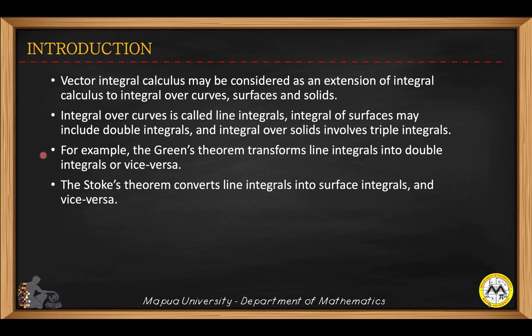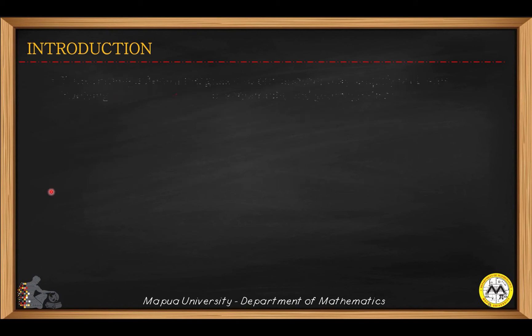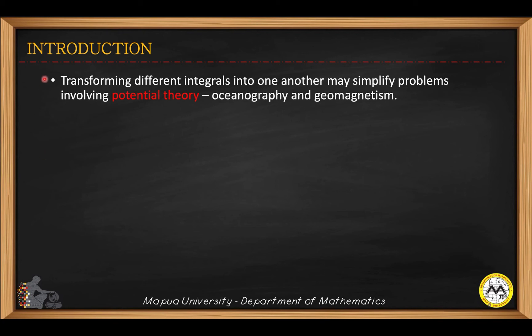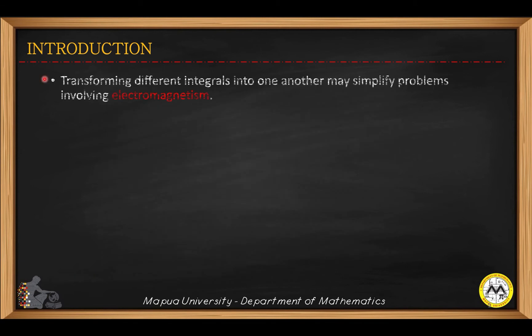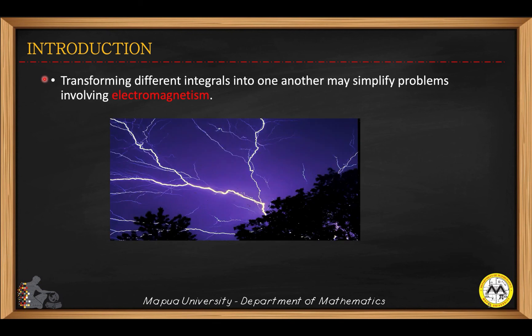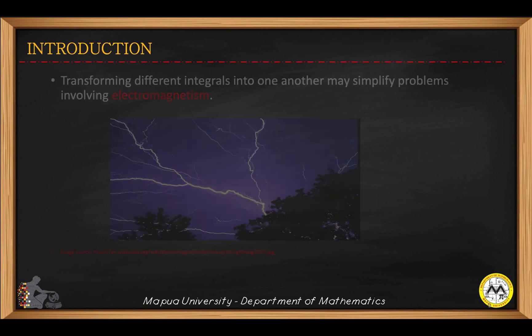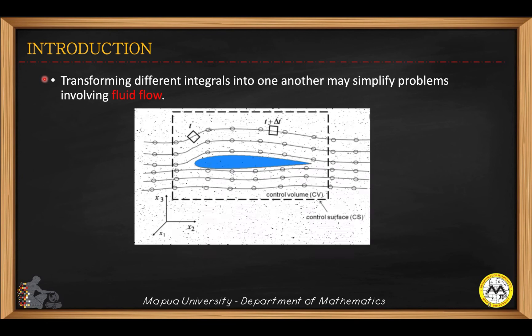Stokes' theorem may be used to convert line integrals into surface integrals and vice versa. Transforming different integrals into one another may simplify problems involving potential theories such as oceanography, geomagnetism, electromagnetism, and fluid flow.